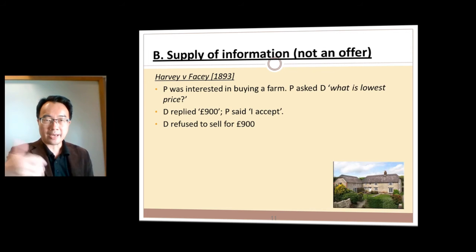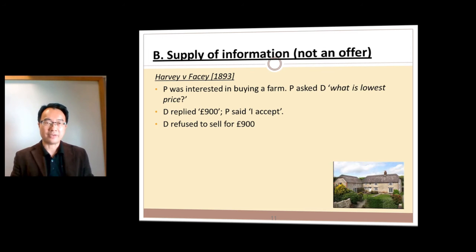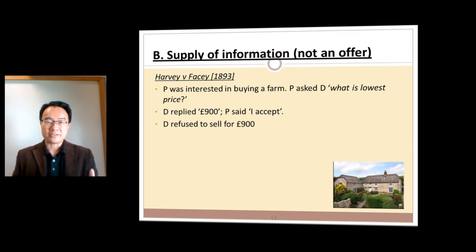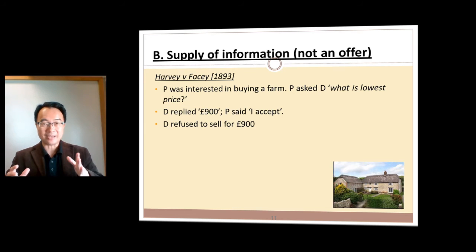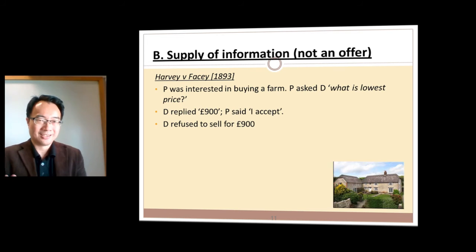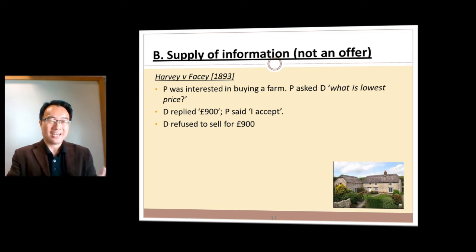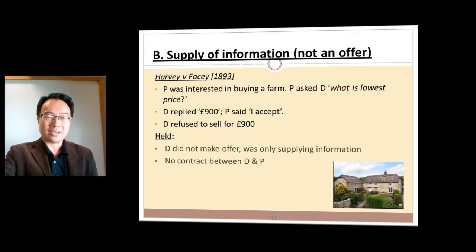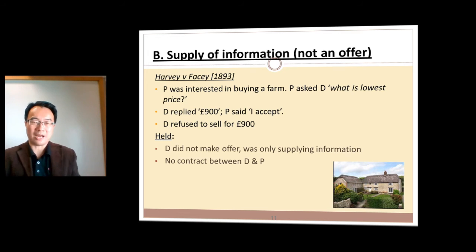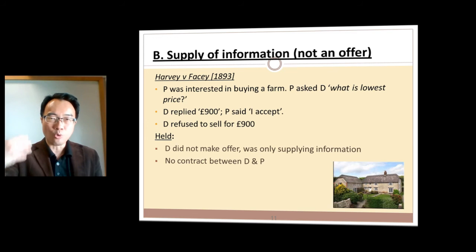Sometimes there are also supplies of information. In the case of Harvey v Facey, Harvey wanted to buy a farm and asked Facey what the lowest price was. Facey said £900. Harvey said, 'I accept.' Facey said, 'I didn't make an offer — what can you possibly accept?' The judge agreed he was not making an offer, only giving information. Saying £900 does not mean 'I'm offering to sell at £900.' Since there's no offer, there can't be an acceptance and therefore no contract.